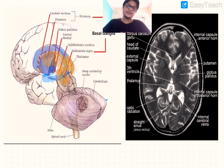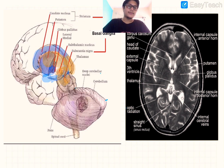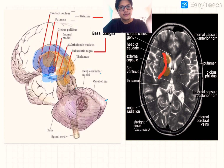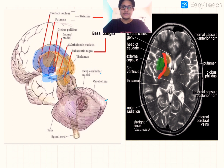In T2 these are reversed: gray matter appears white, white matter appears gray, and the CSF appears bright white. In this T2-weighted image, here is the caudate nucleus, this is the thalamus, over here there is the internal capsule, and here we have your lentiform nucleus. That's your basic anatomical overview of the basal ganglia.